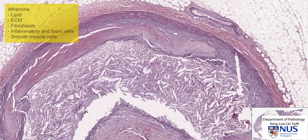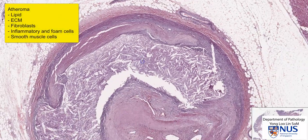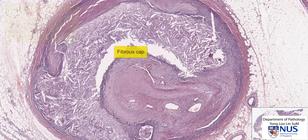This plaque is composed of a central lipid core, and around it we have a lot of extracellular matrix material — proteoglycans, collagen, elastin — as well as fibroblasts, some inflammatory cells, and smooth muscle cells. This is the fibrous cap.